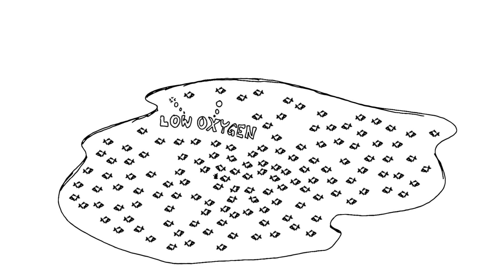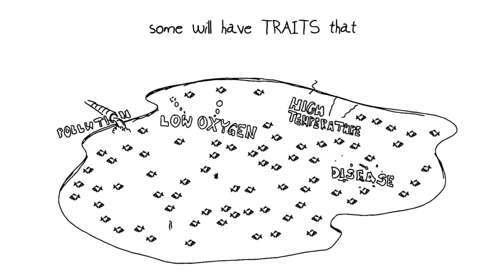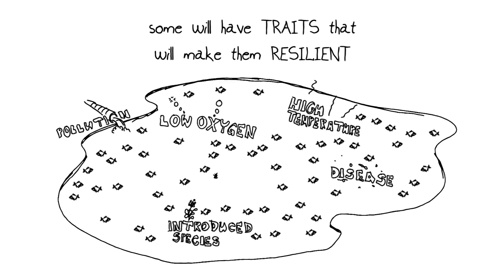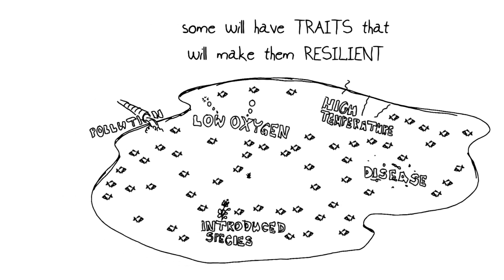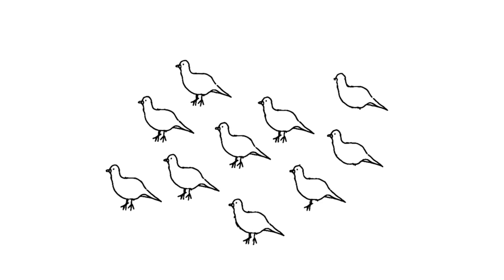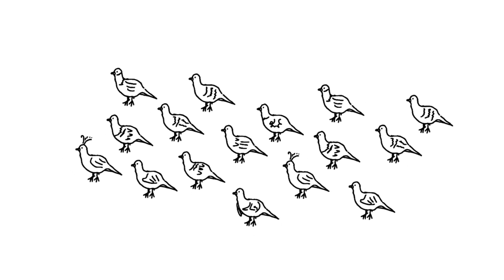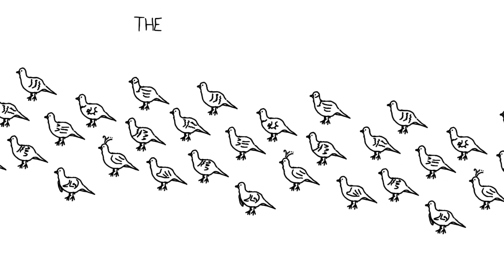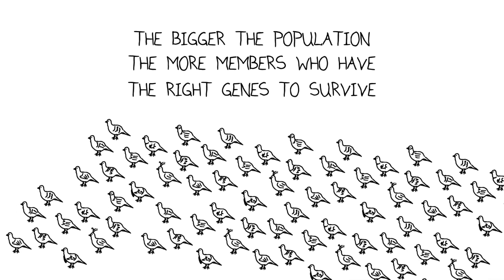The larger the gene pool, the greater the genetic diversity, and the higher the chances are that some members of the population will survive or even flourish in times of environmental change and challenges. That's because some individuals will have traits that make them resilient in the face of environmental changes, more resistant to disease, and more able to survive changes in climate. This is due to how natural selection works, selecting for fitter individuals that pass on their beneficial characteristics. Basically, the bigger the population, the more likely there will be individuals with some unique combination of genes that will allow their survival.